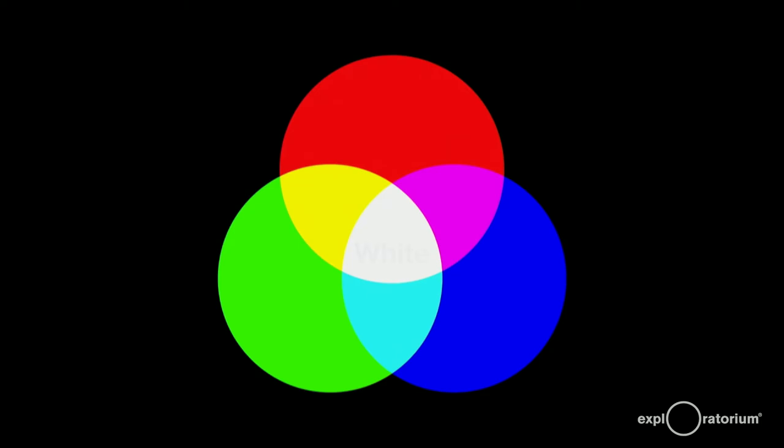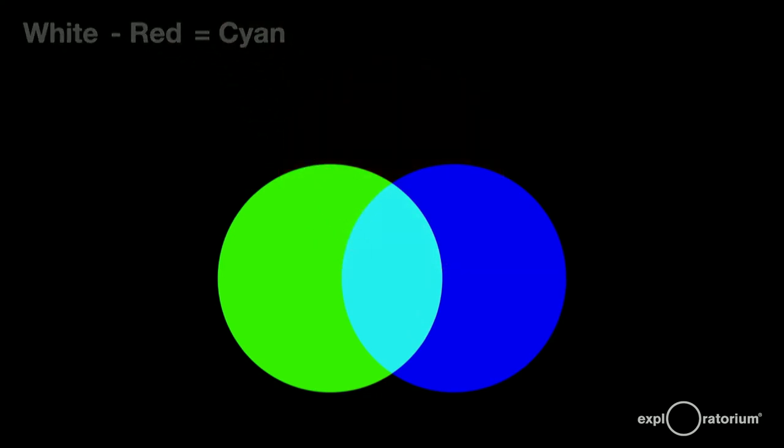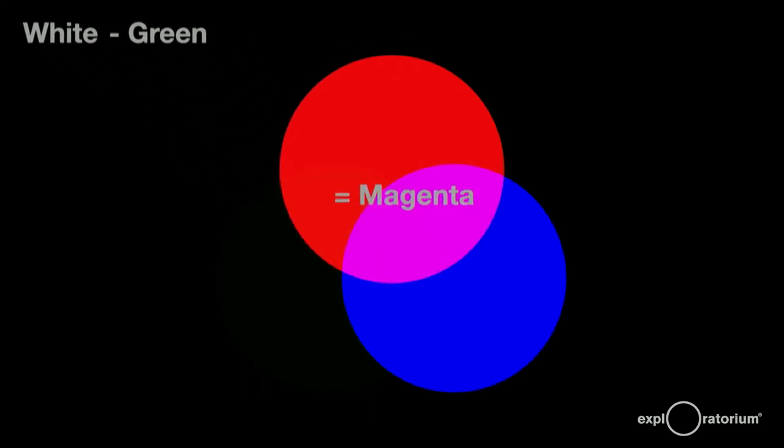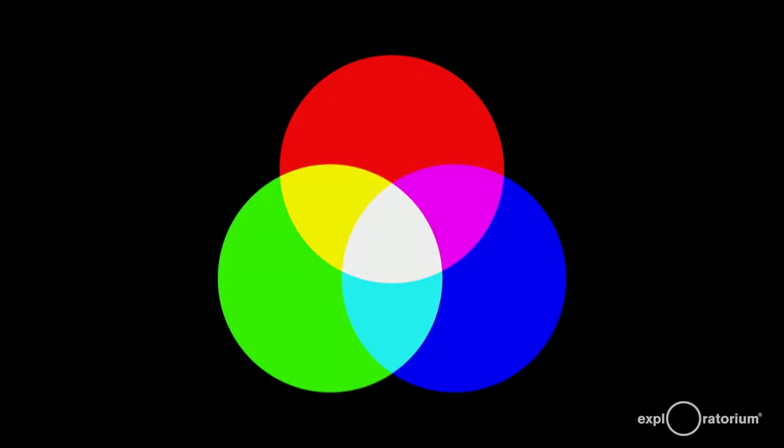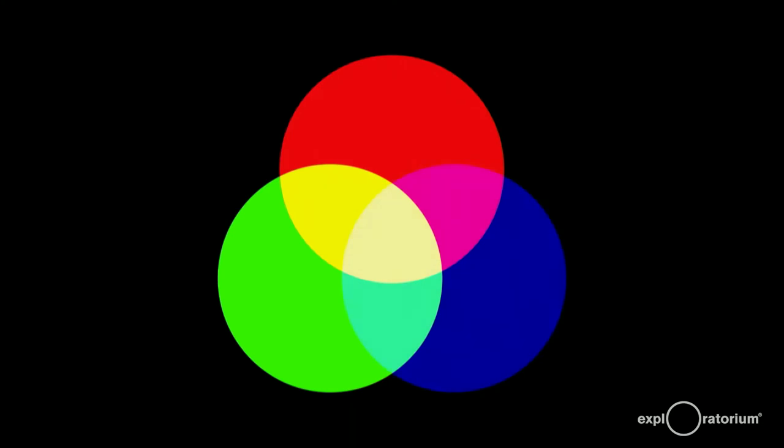When you add complementaries, you get white. When you take away colors from white, you get complementary colors. If you take red away from white, you get its complement, cyan. Take green away from white, and you get green's complement, magenta. And just to complete the set, if you take blue from white light, you're left with blue's complement, yellow. This idea of taking away colors will lead us nicely to subtractive color mixing.